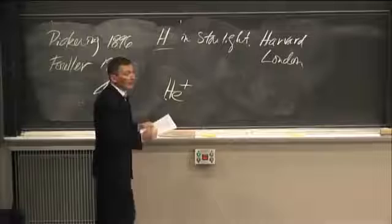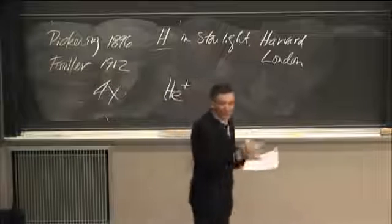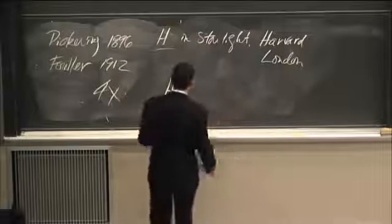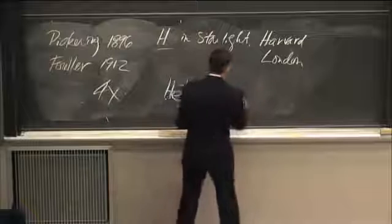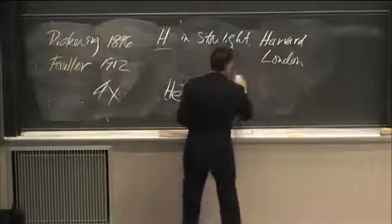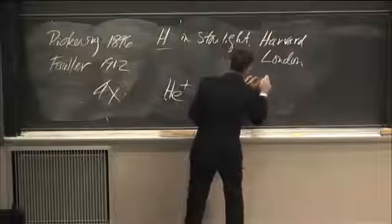So Fowler was a pompous ass. He didn't like being called on his bad science. So he does a calculation and he looks more carefully and he says, Bohr, you're wrong. In fact, our lines are off by 4.0016.